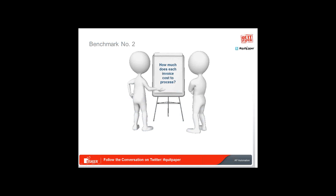The next KPI is how much does each invoice cost to process. This looks at another way of measuring productivity and what your cost is to move from a less automated to a more automated system — as you do that, your cost per invoice should drop significantly. It is also a good measure for comparing ROI when looking at different automation solutions.